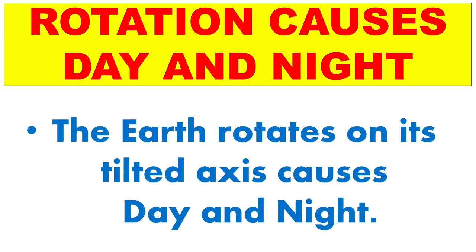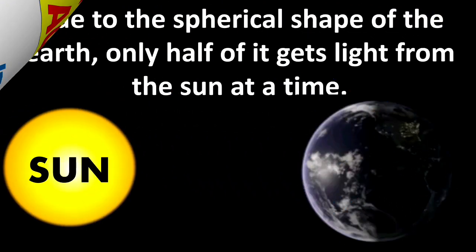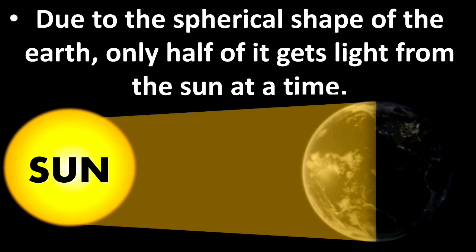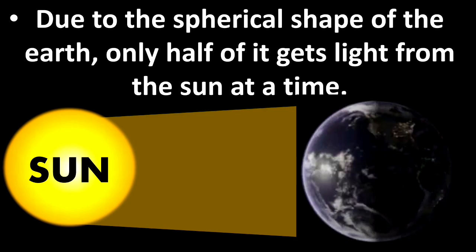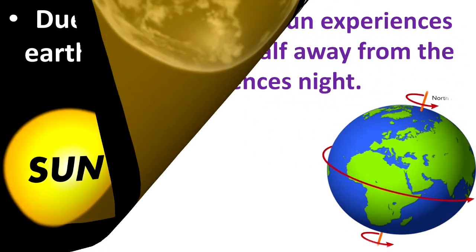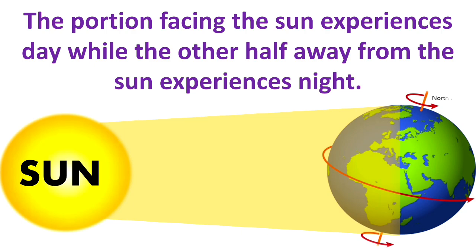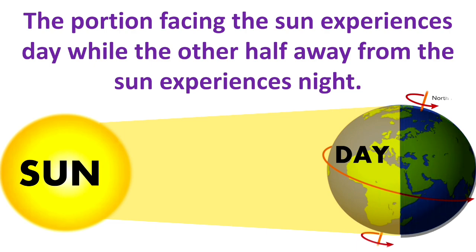Rotation causes day and night. The earth rotates on its tilted axis, which causes day and night. Due to the spherical shape of the earth, only half of it gets light from the sun at a time. As you can see in this picture, the portion facing the sun experiences daytime in all the countries on this half, and at the same time the countries on the other half of the earth which are away from the sun experience nighttime.